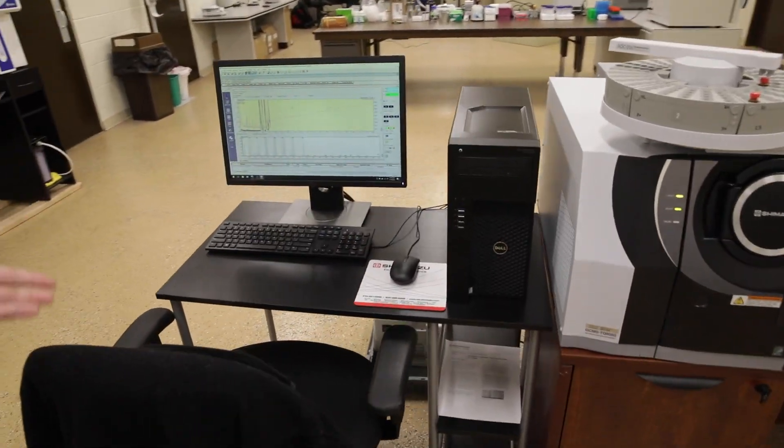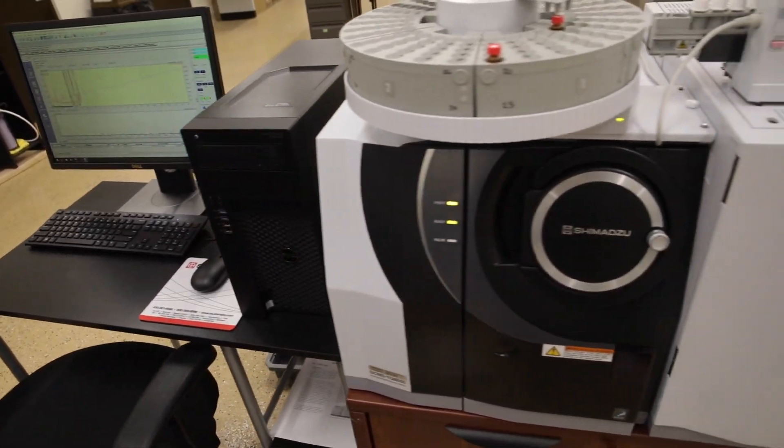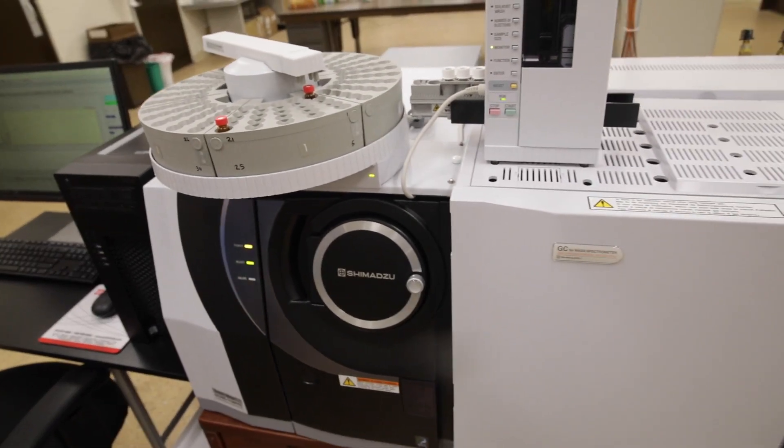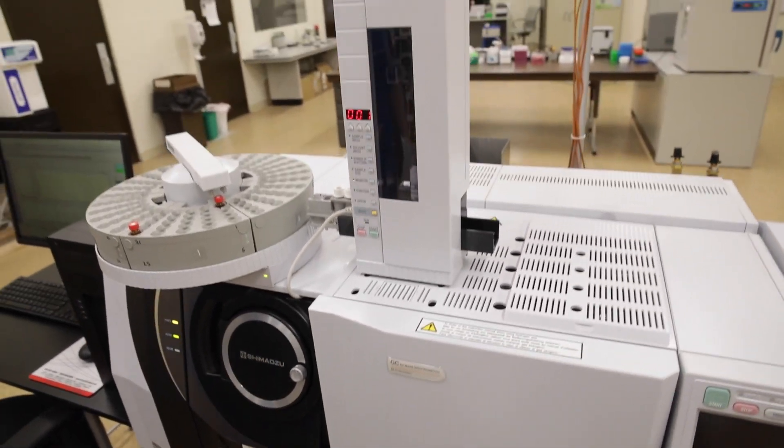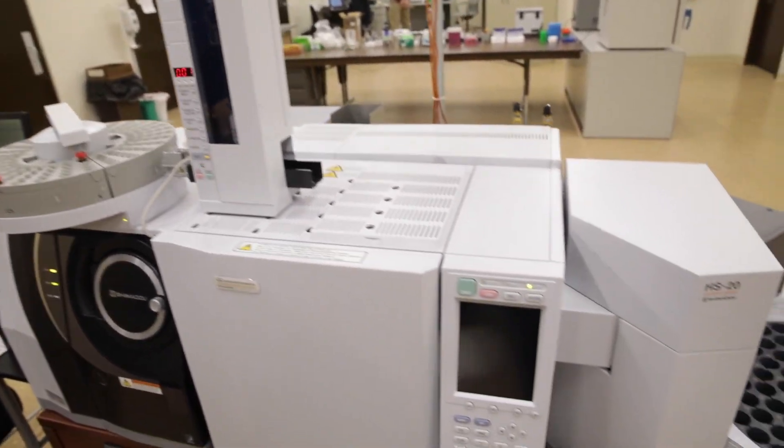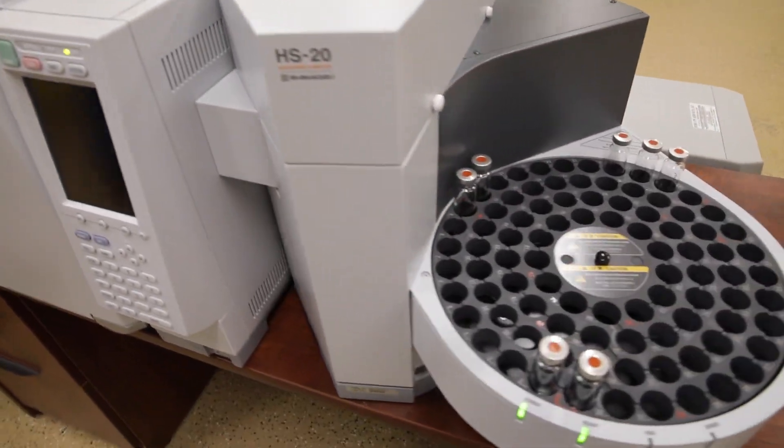To my left here is a GC triple quad. Here we'll be examining a full list of terpenes, as well as more pesticides and residual solvents.